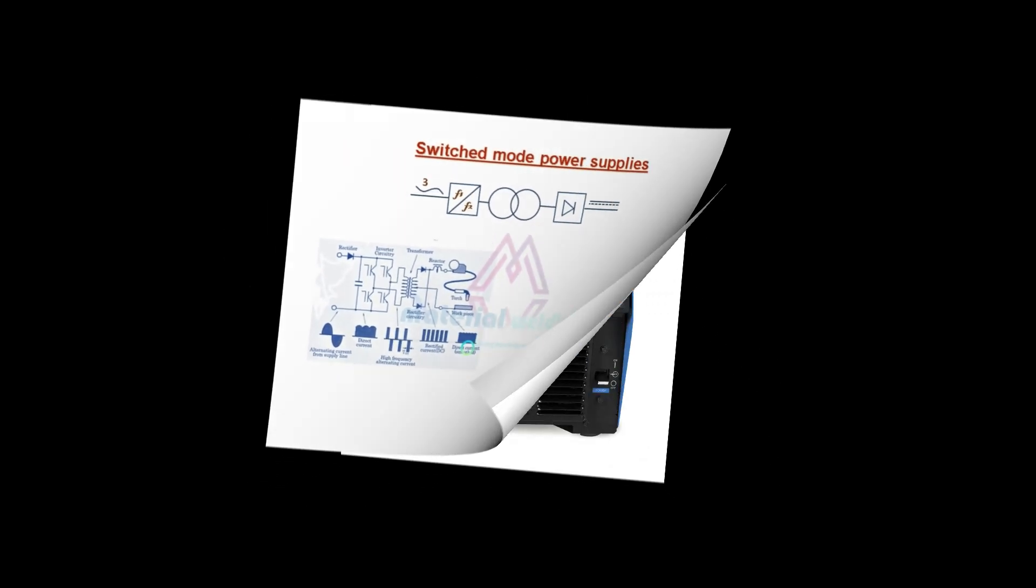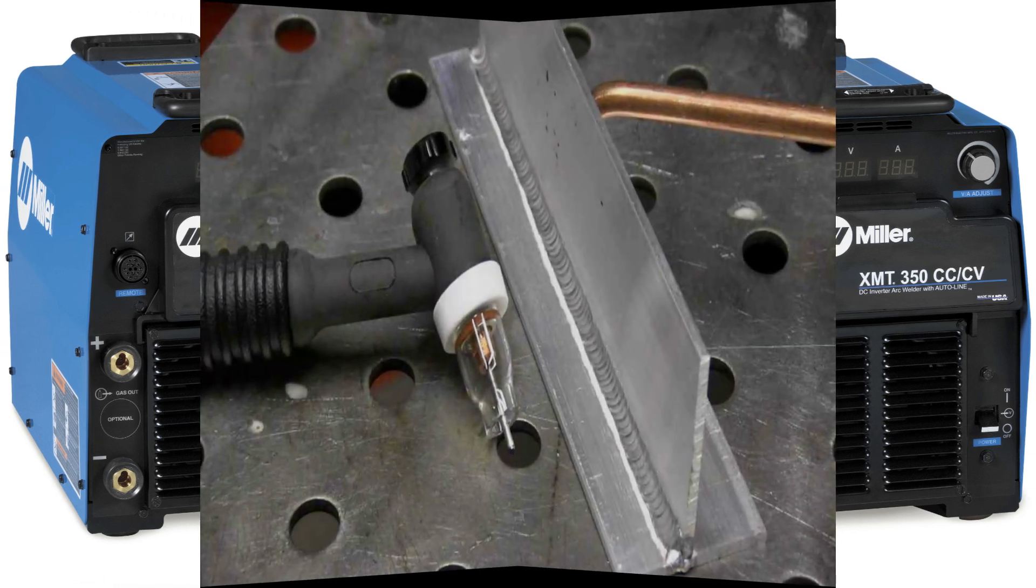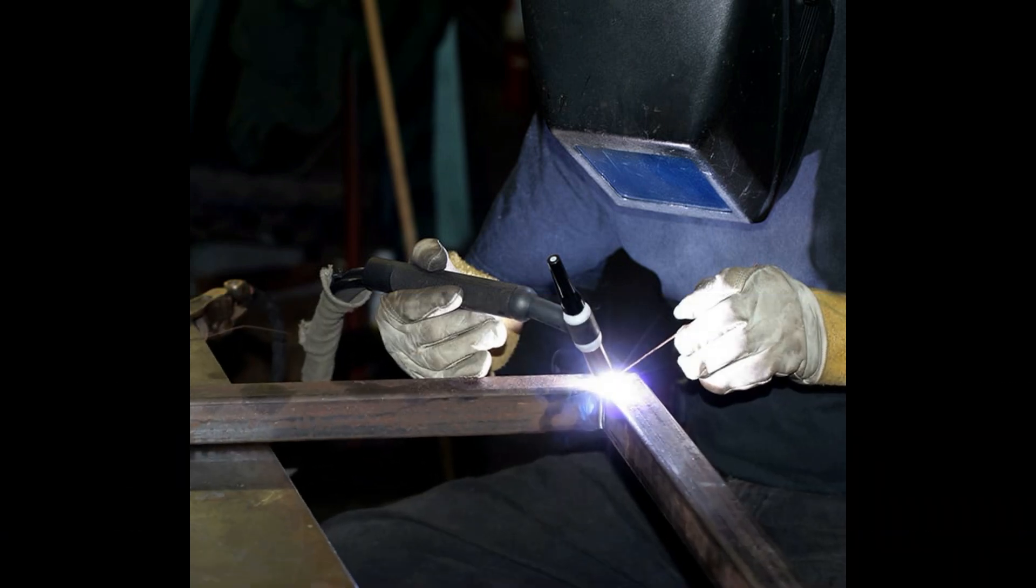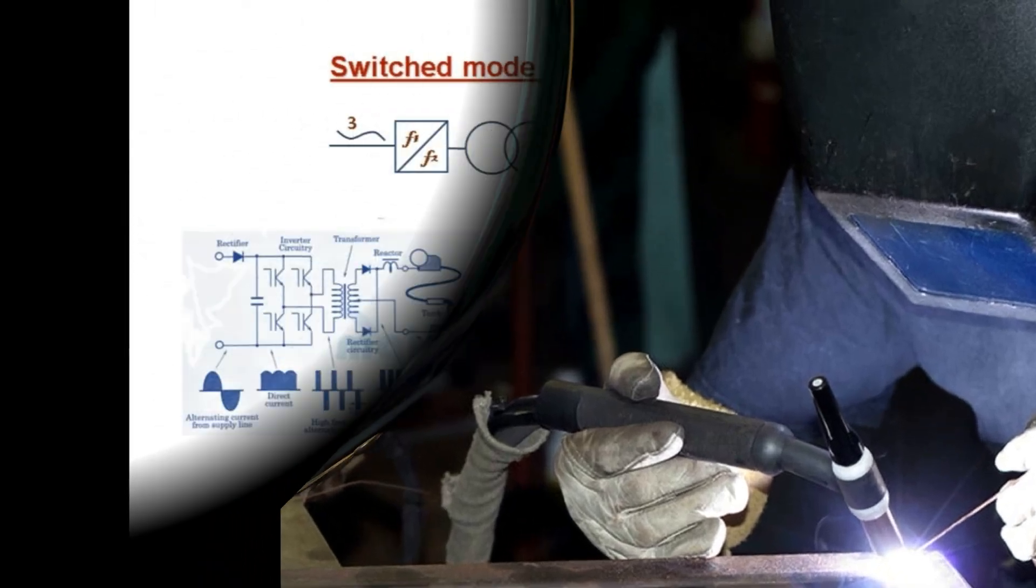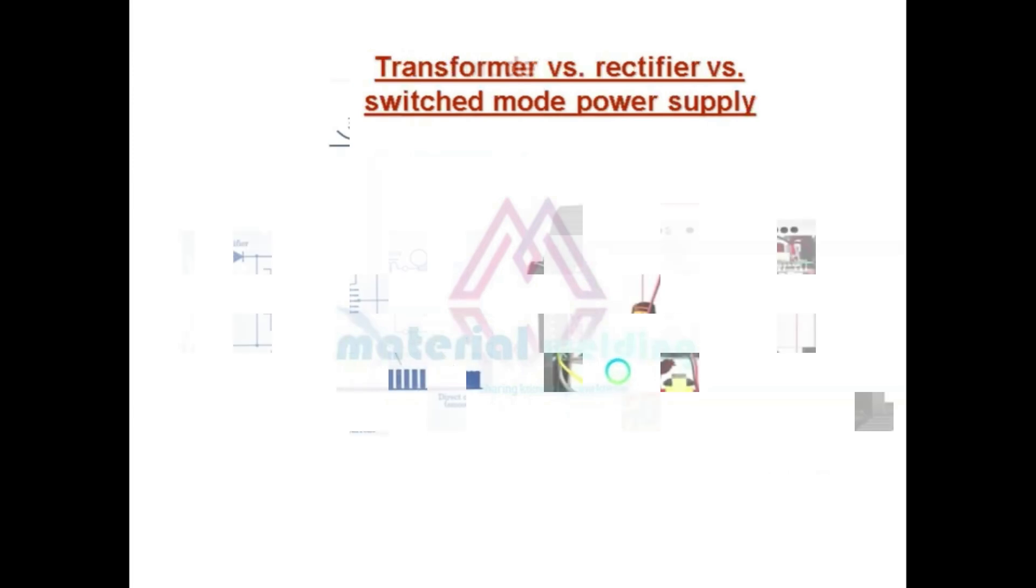The main advantage of this type of power source is that they can generate both alternating current and direct current for different types of welding operations. One example is we can use this power source for welding aluminum with AC current, and we can use DC polarity for welding carbon steel or other materials. These devices use sophisticated electronic panels and they are very costly.